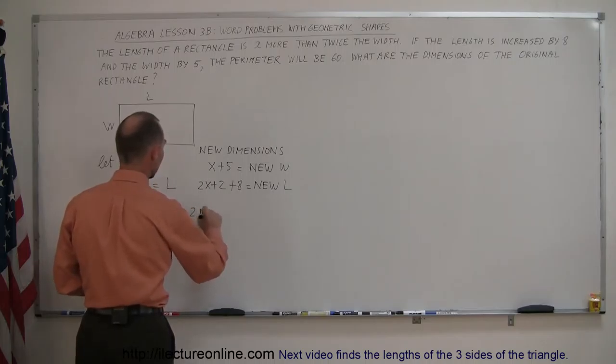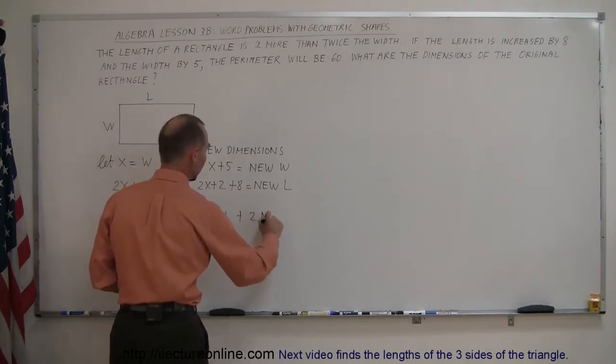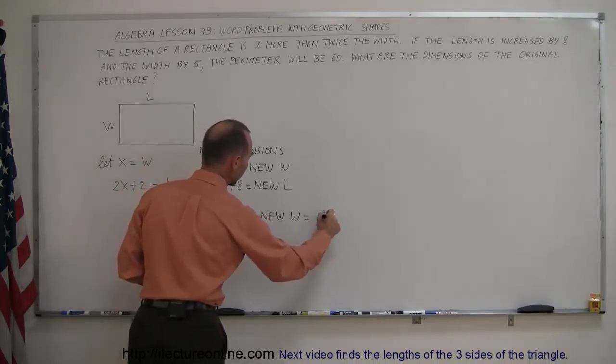So 2 times the new length plus 2 times the new width equals the perimeter, which is 60.